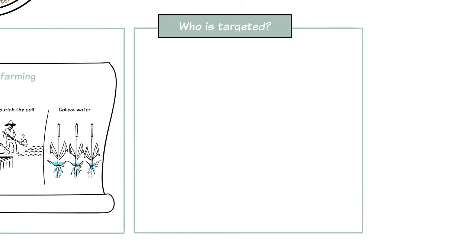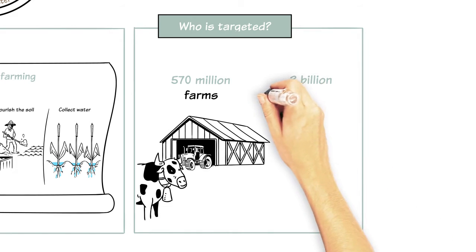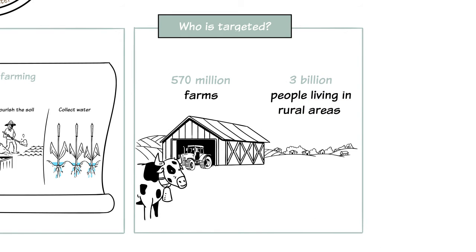Who is targeted? There are 570 million farms in the world and more than 3 billion people living in rural areas that could implement these practices.